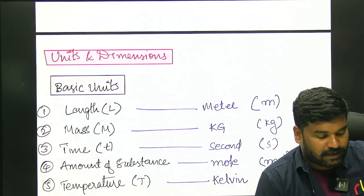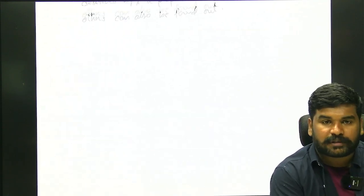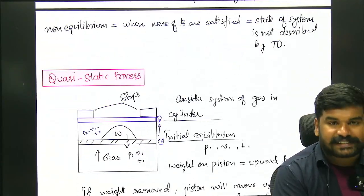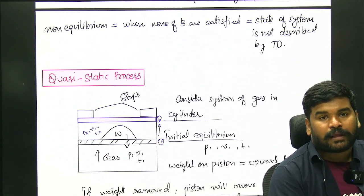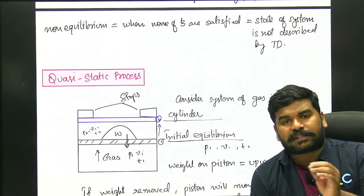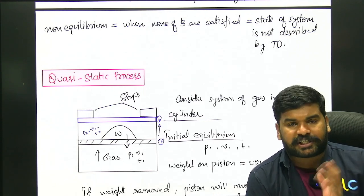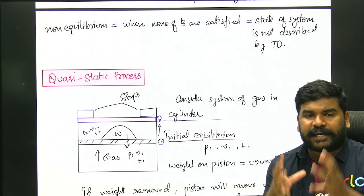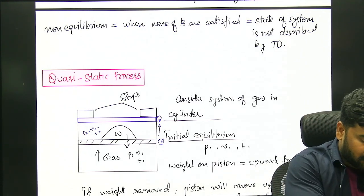Hi friends, this is Nikhil. In the last class, we introduced thermodynamics and discussed different types of topics. Last class, we discussed the quasi-static process. So what is the quasi-static process? We will study thermodynamics in the equilibrium state. Thermodynamics is associated with stable states. State variables are associated with a particular system. So we will discuss the thermodynamics point of view.